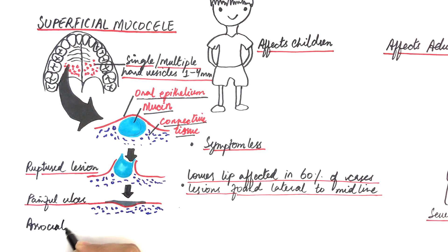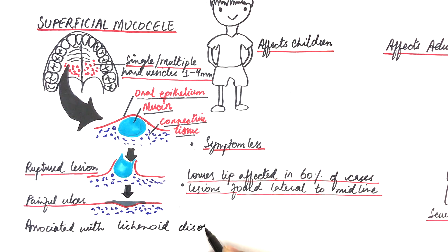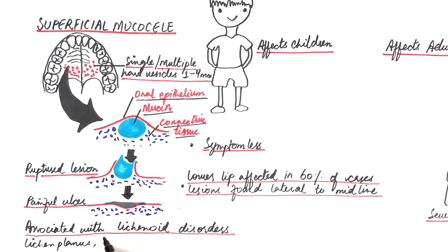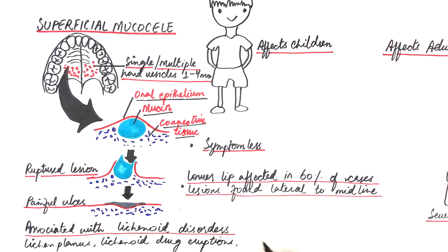This superficial variant most often appears in association with lichenoid disorders, such as lichen planus, lichenoid drug eruptions and chronic graft-versus-host disease.